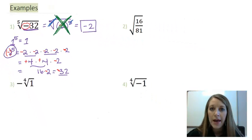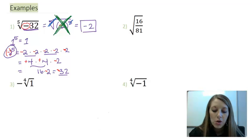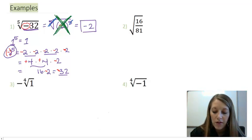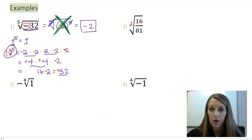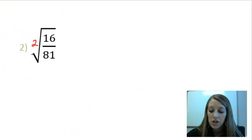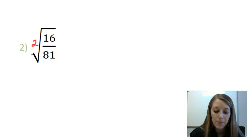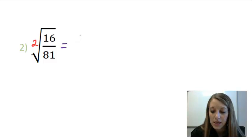Moving over to example two, I have a square root here. So, if there's no number in the little crevice, it's assumed to be a square root. This one is a fraction, but you just take the square root of each individual piece. On the top, I need something times itself two times to give me 16, and that works out to be four.